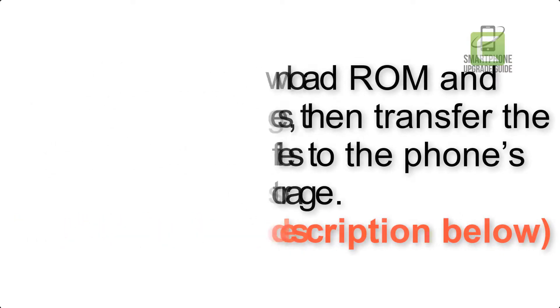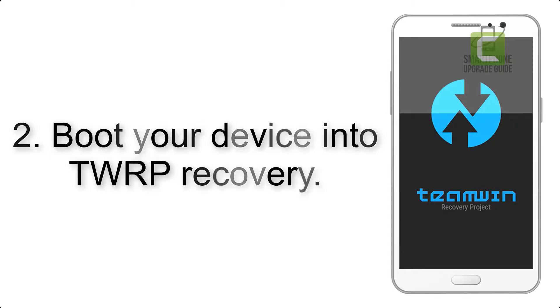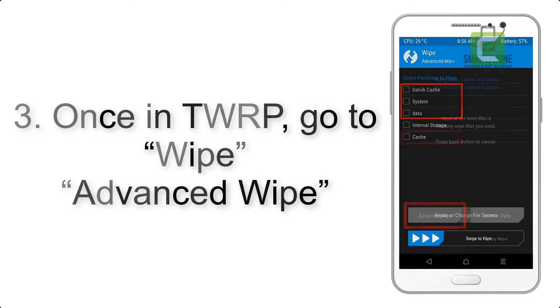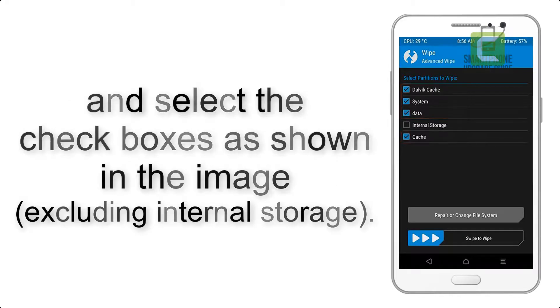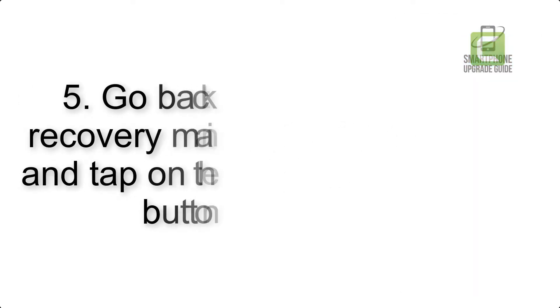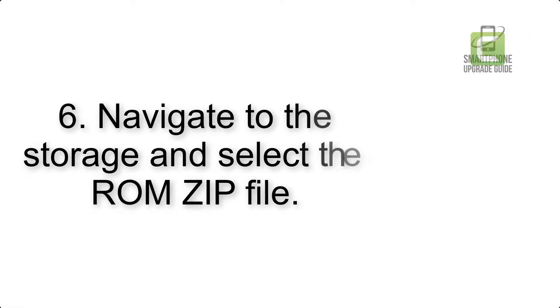Step 2: Boot your device into TWRP recovery. Once in TWRP, click on Wipe, then Advanced Wipe, and select the checkboxes as shown in the image, excluding internal storage. Step 4: Swipe the button to wipe the device.